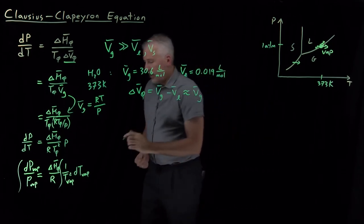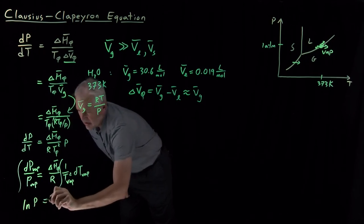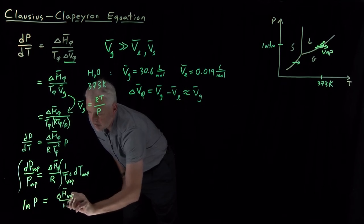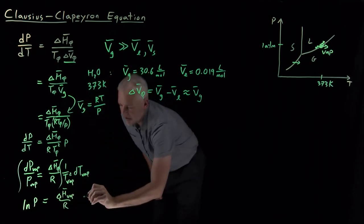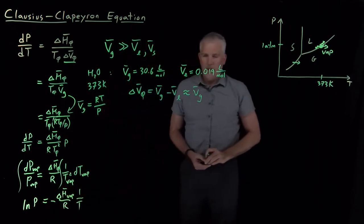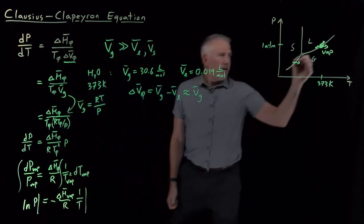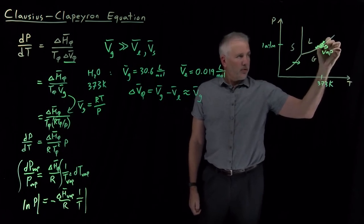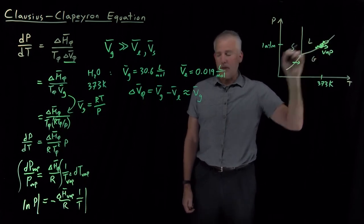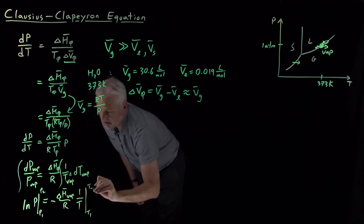So, we know how to do both of those integrals. Integral of one over P is natural log of P. Integral of one over T squared, I'll go ahead and write the delta H of vaporization over R. Integral of one over T squared is one over T, but with a negative sign. And I have to evaluate that integral between some initial state. If I start here and move to here, I've started at T1 and P1, and I've moved to some T2 and P2. So, I'm integrating from P1 to P2 and T1 to T2.